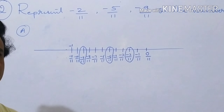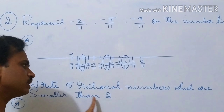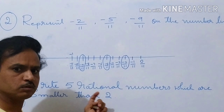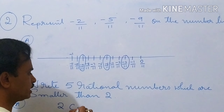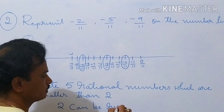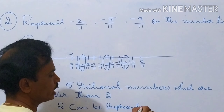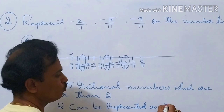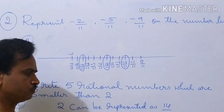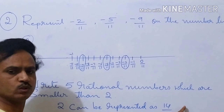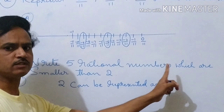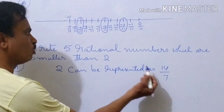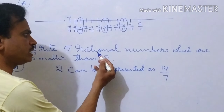Question number 3: write 5 rational numbers which are smaller than 2. So here, 2 can be represented as 14 by 7. Why 14 by 7? 7 ones are 7, 7 twos are 14, so 2 can be represented as 14 by 7.